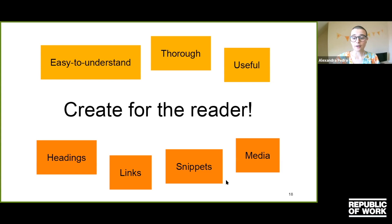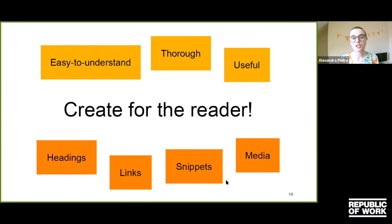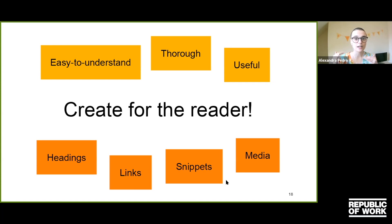Some people learn better by reading, others by hearing, others by seeing. So I would recommend creating different media — images, videos, voice — to explain things according to how they work best. This would allow you to not only rank for the traditional organic results, but also for the media sections, such as the images and news sections.